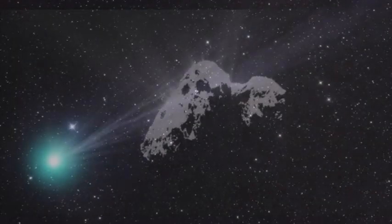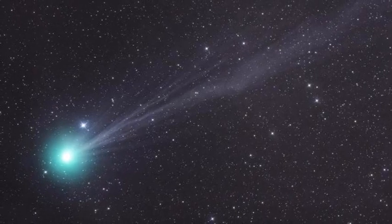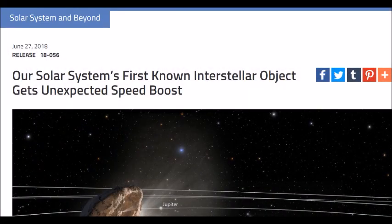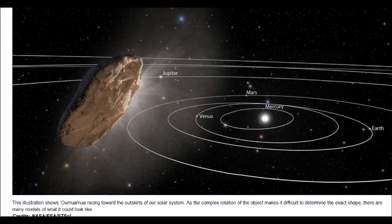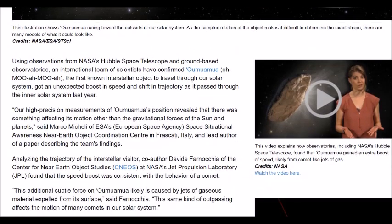It is normal for comets to eject huge plumes of dust and gas when affected by the heat of the Sun, which can change their speed and movements. But what is unusual about the interstellar object, according to Olivier Honnett of the European Southern Observatory, is that there are no visible signs of gas ejections.